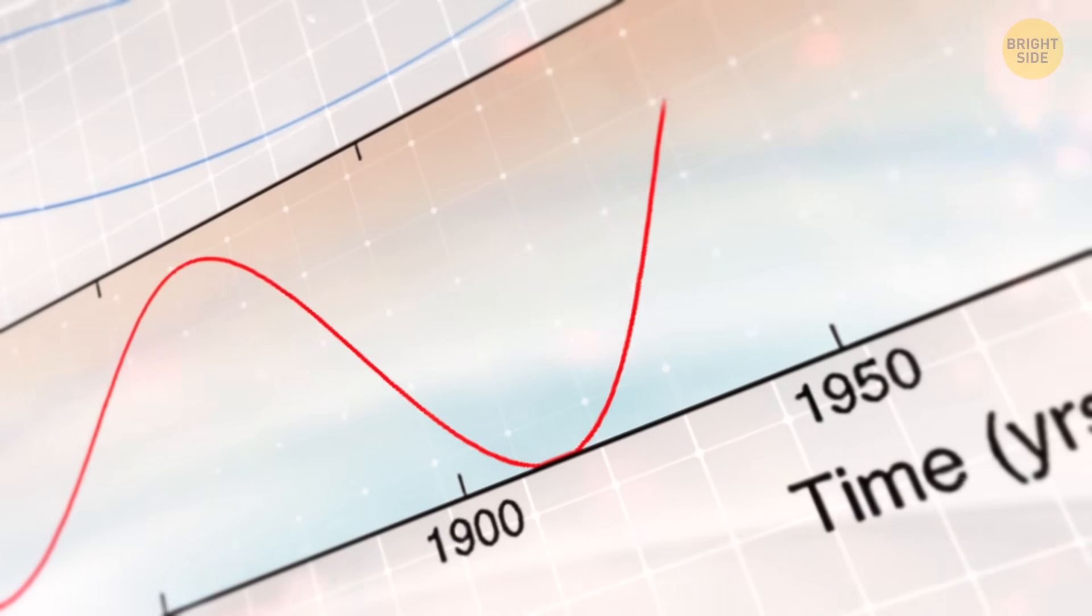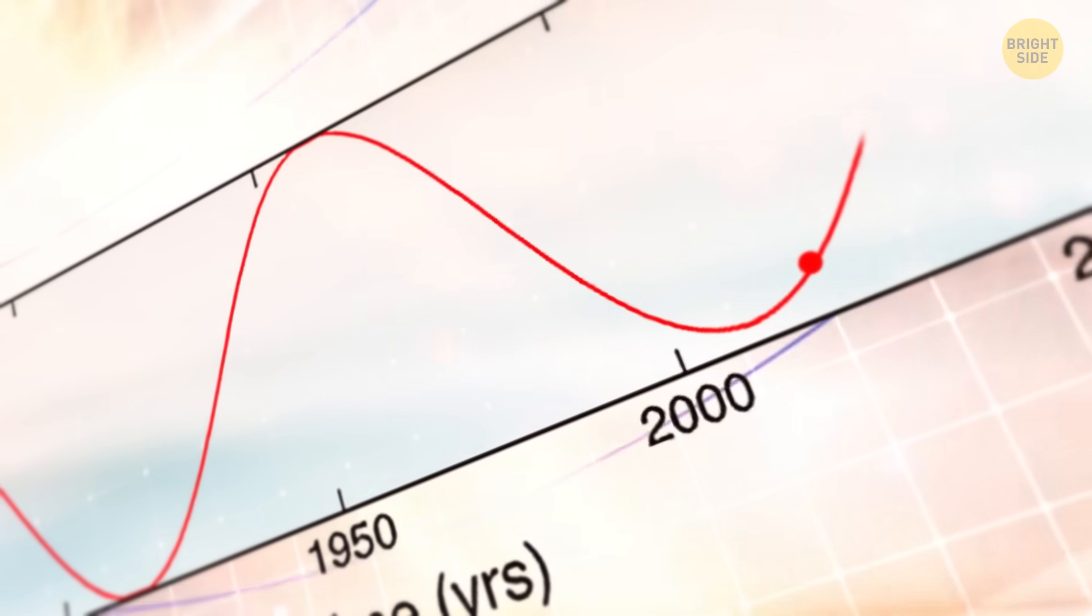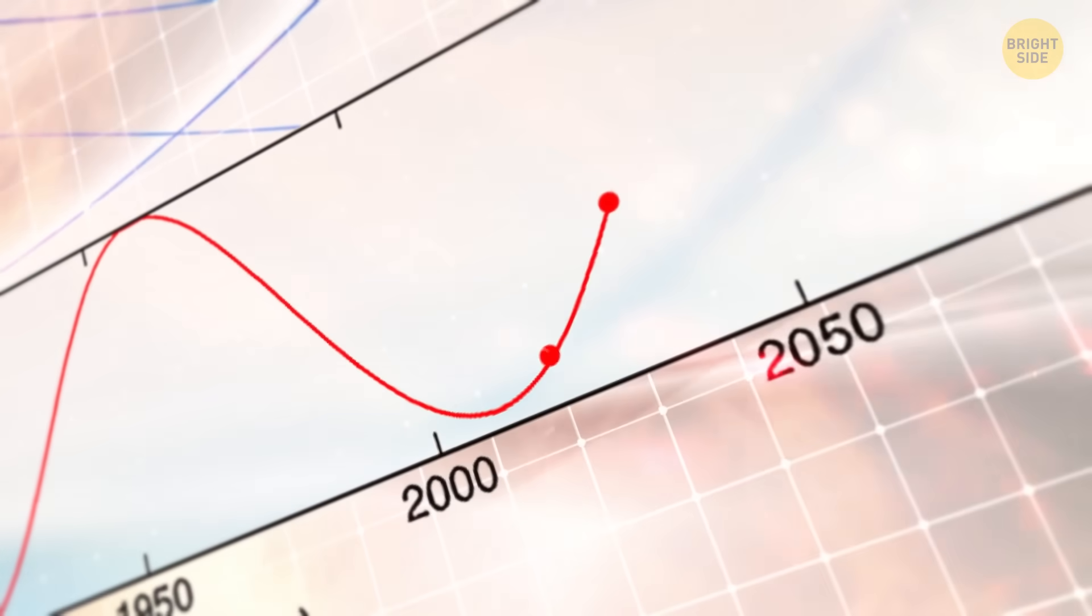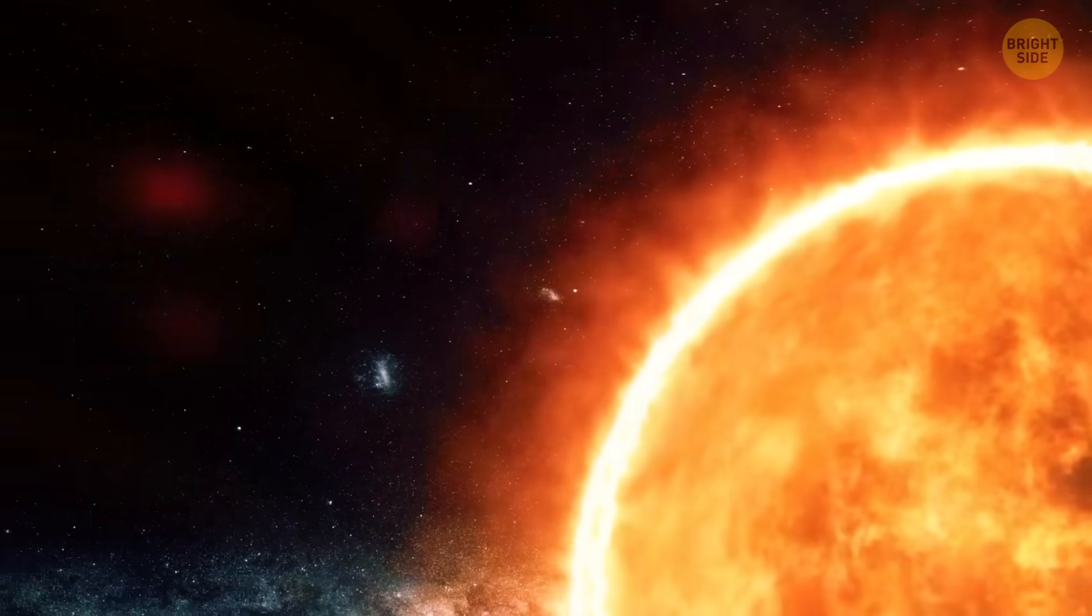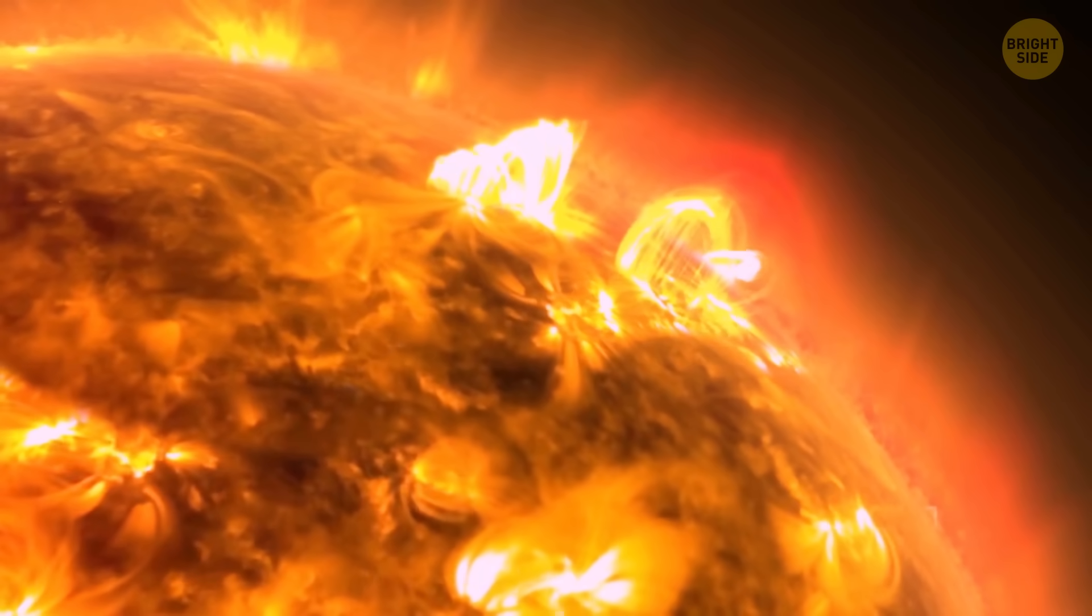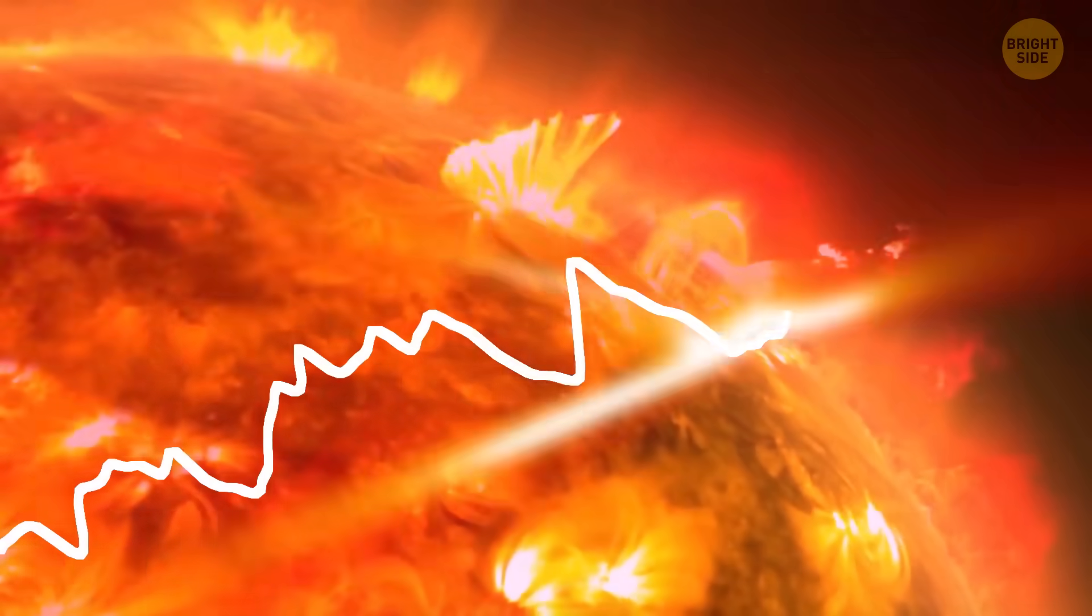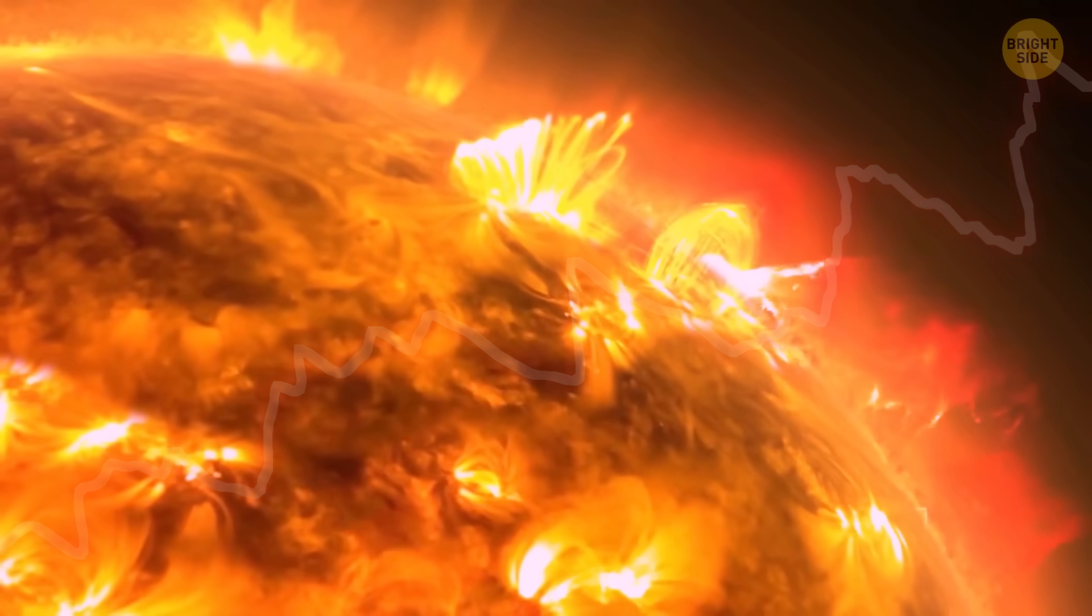Now, scientists think that SC24's quiet phase was because of the Centennial-Gleisberg cycle being at its low point. That probably made it the quietest sunspot cycle in 100 years. So now that SC25 is lit again, pretty literally, it might just mean the Sun is back to doing what it normally does, being a little chaotic and wild.